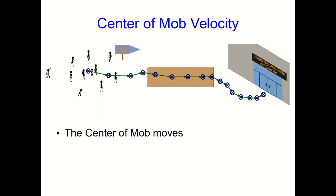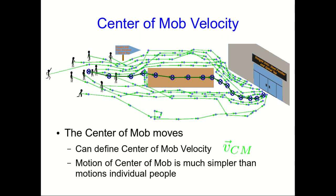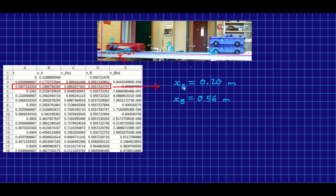And the mob moves, so the center of mob will move, and so you can define a center of mob velocity. And one thing to notice is that the center of mob's motion is going to tend to be much simpler than the motions of the individual people, because in the averaging process, the complexities of their motions will tend to cancel out. Let's apply this idea of an average position to a nice clean physical system instead of a messy complicated thing like a crowd of people.